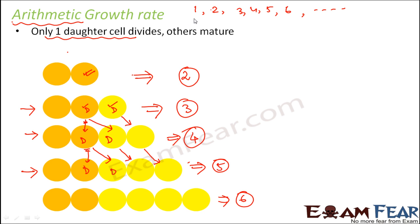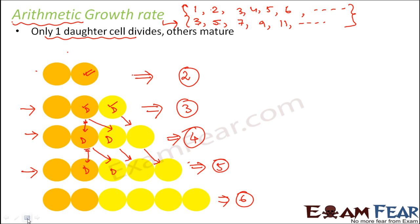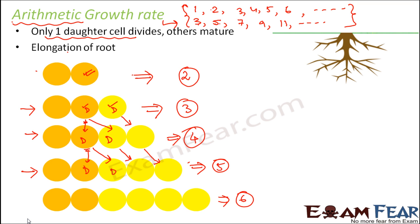Arithmetic progression is any series where the difference between consecutive numbers is equal — for example: 1, 2, 3, 4, 5, 6 (difference of 1) or 3, 5, 7, 9, 11 (difference of 2). Wherever growth happens arithmetically like this, it is known as arithmetic growth rate — the growth happens linearly, with one cell added at a time as time increases.